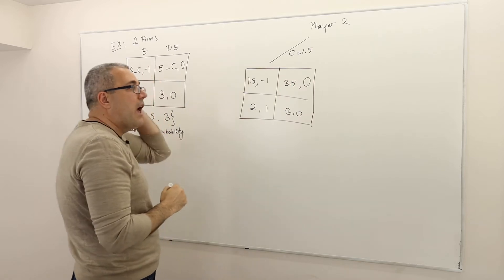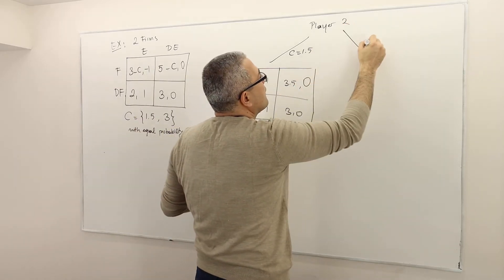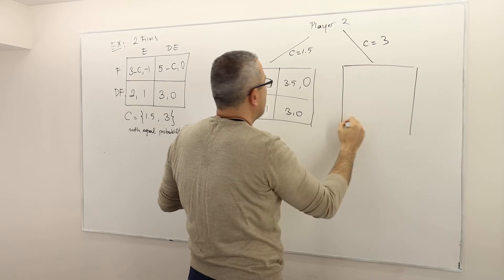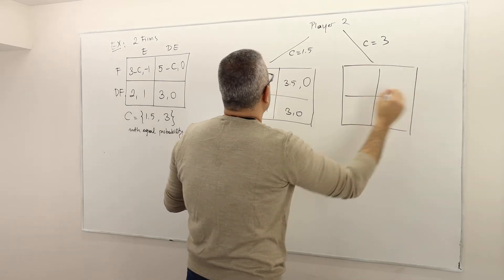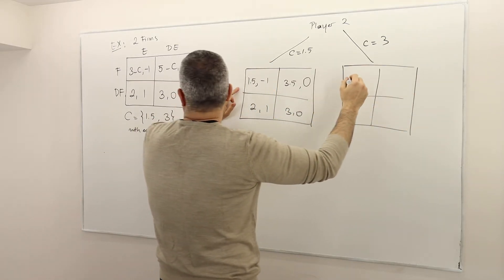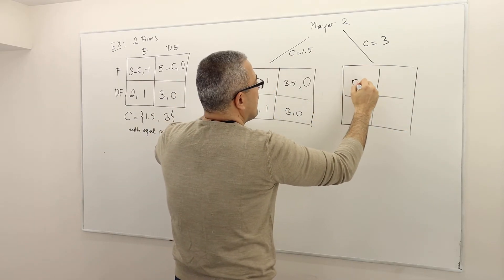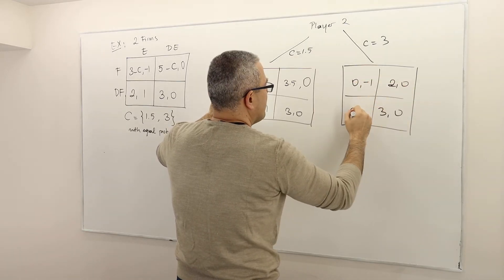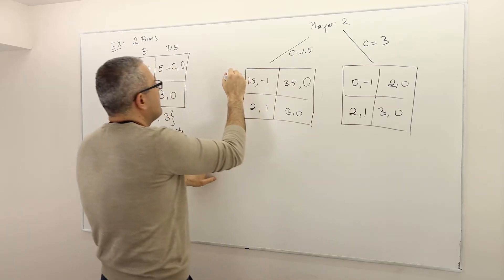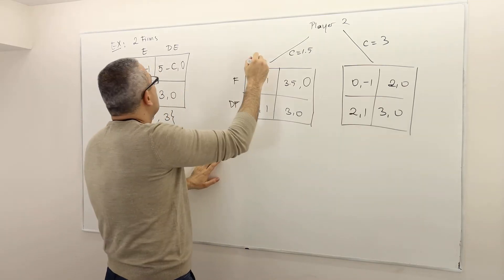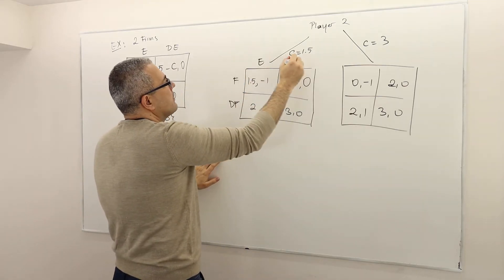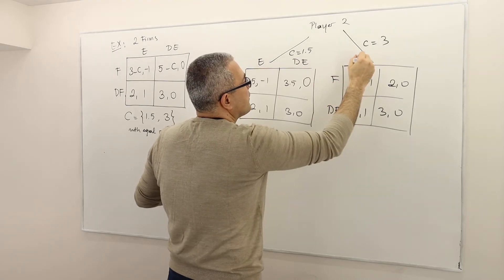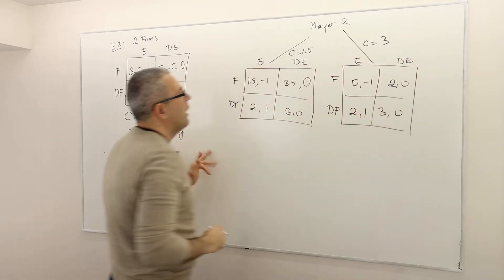And if the value of C is equal to 3, then the game is going to be: 0, -1; 2, 0; 3, 0; 2, 1. Again — fight, don't fight, enter, don't enter; fight, don't fight, enter, don't enter.